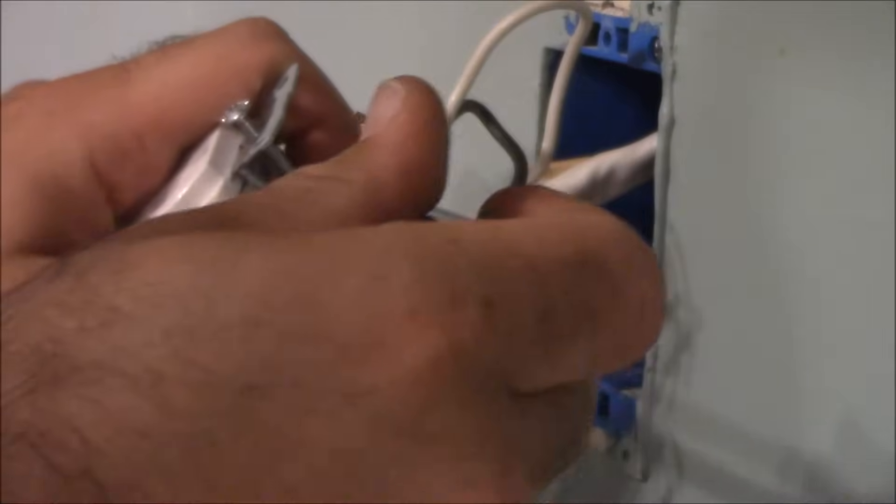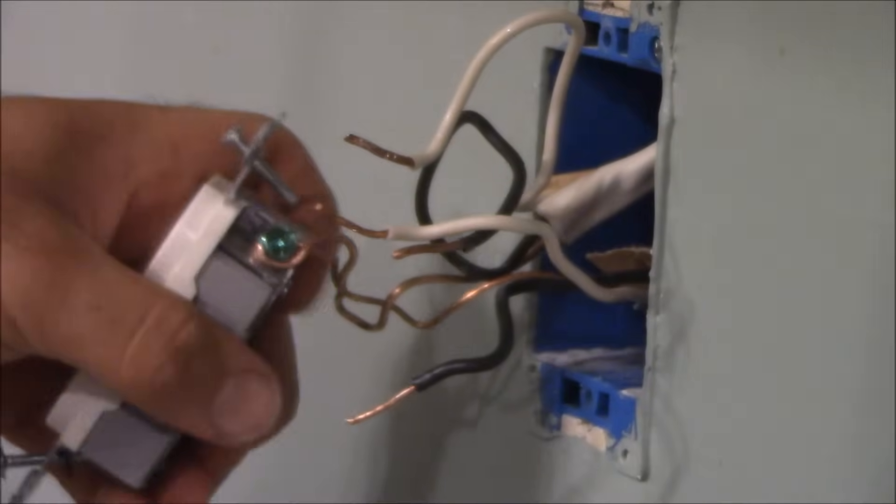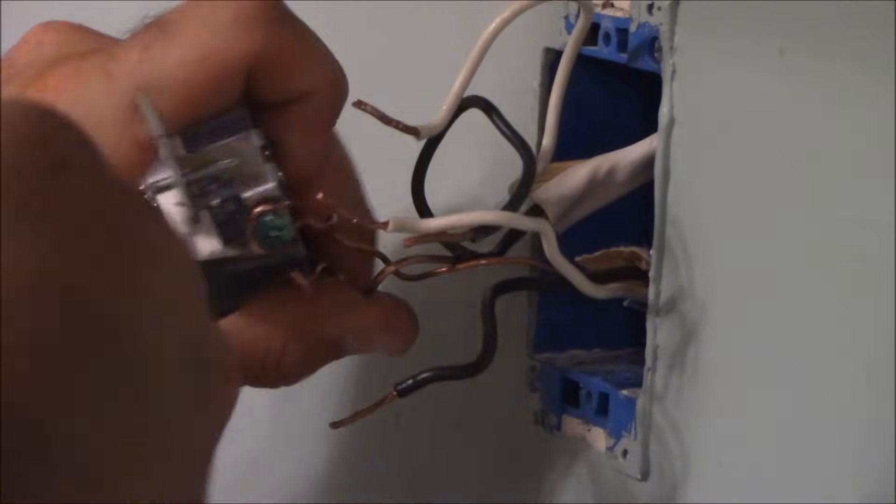And then you're going to have to disconnect your ground, which is the green screw on the bottom. These are normally wrapped around, so you're probably going to take your needle nose pliers and kind of pry them off.